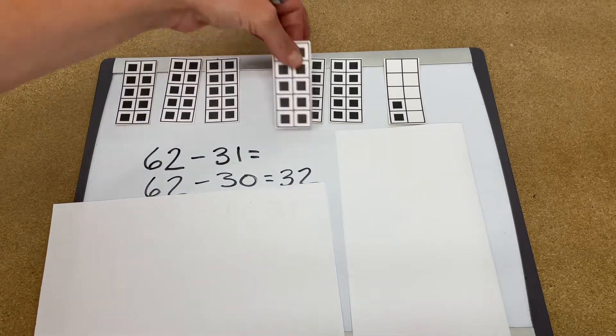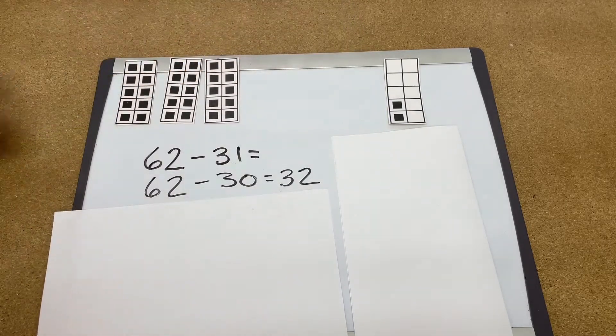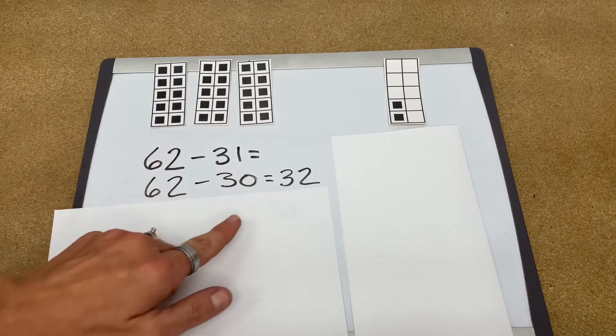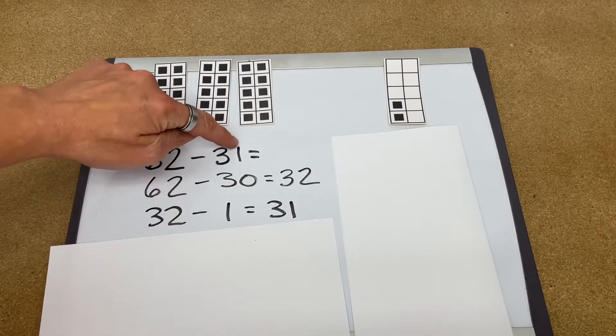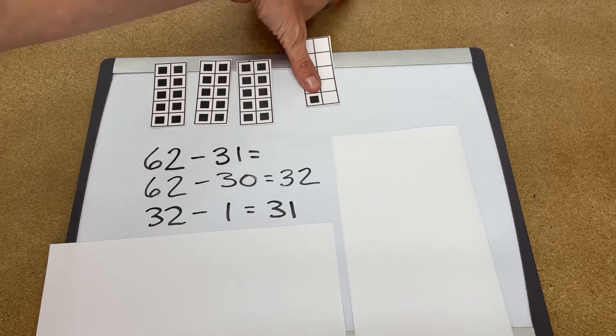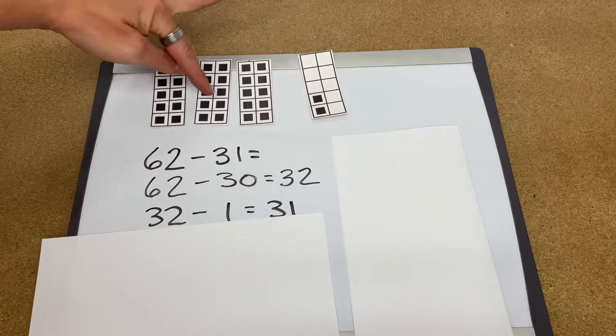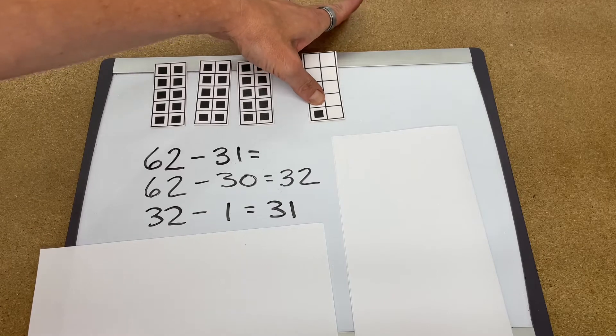62 take away 30 leaving us with 32. Then we take the 32 again and we subtract the one that's here. We can just simply cover the one here, how many are left? 31, and we write it like that.